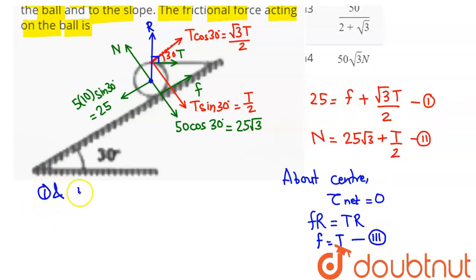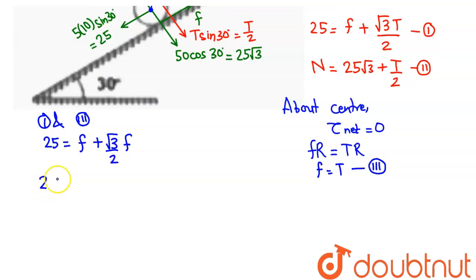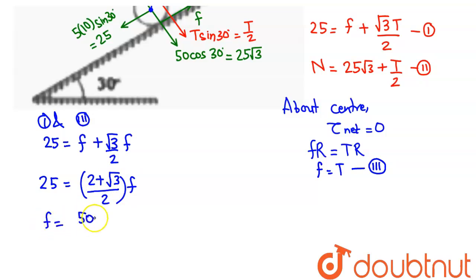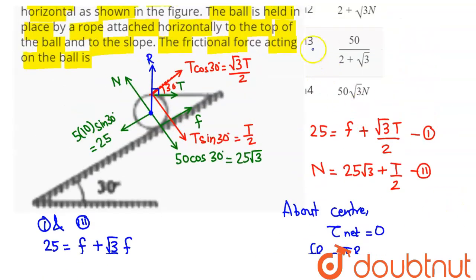Comparing Equations 1 and 3: since friction = tension (T = F), substituting into Equation 1 gives 25 = F + (√3/2)F = F(2 + √3)/2. Taking LCM, friction = 50/(2 + √3) N. Among the four options, option 3 — 50/(2 + √3) — is the corresponding frictional force acting on the ball. Hence, option 3 is our answer.